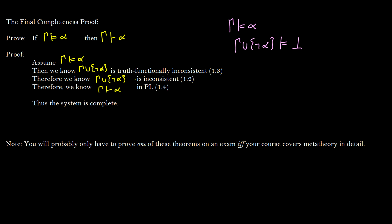Okay so because of that and the theorem that we just proved we now know that this also means that gamma union not alpha proves the false. That's what we just did. That's what the past four videos were about.